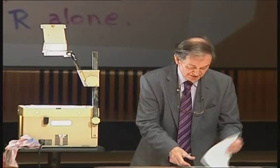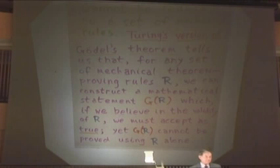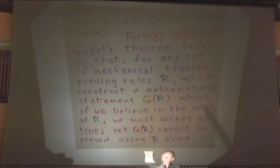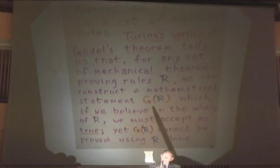This is really Turing's version of Gödel's theorem — much easier to state. If you have a set of mechanical theorem-proving rules which have the property that you can check computationally whether they have been carried out correctly, and if you trust those rules to be correct and not prove 2 equals 3, then you can construct quite explicitly a specific statement about natural numbers — call it G(R), the Gödel statement — which, on the same basis of your trust in R, you must believe is true. Yet you cannot prove G(R) using the rules.